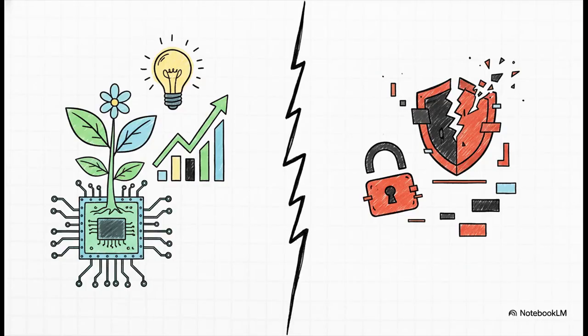And that right there, that's the central problem, isn't it? AI is this incredible double-edged sword. On one hand, it could solve some of our biggest challenges. On the other, it could create disasters we've never even imagined. It's a tool and it's a weapon, all rolled into one.